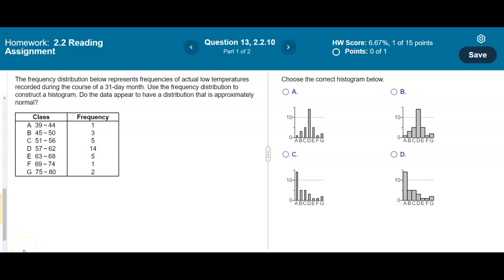The frequency distribution below represents frequencies of actual low temperatures recorded during the course of a 31-day month. We want to use the frequency distribution to construct a histogram. Do the data appear to have a distribution that is approximately normal?